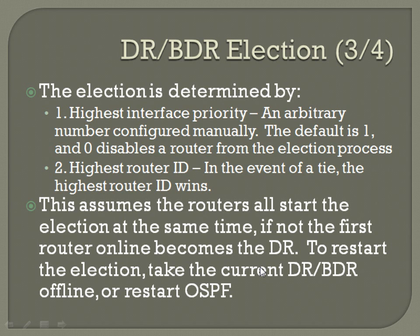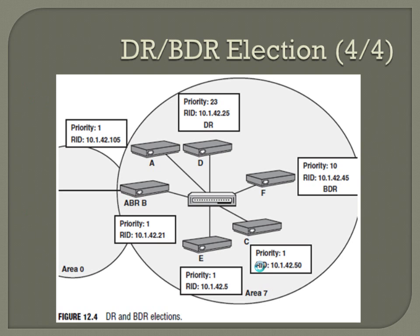Right here, you've got Area 7. You're going to have a designated router and backup designated router for this network. The first thing you want to look at is priority. You can see these routers all have the default priority of 1 — those have not been changed. But on these two routers, D and F, they've manually changed the priority. Highest priority wins: D is going to be your designated router because it's got a priority of 23, and F is going to be your backup designated router because it's got a priority of 10.